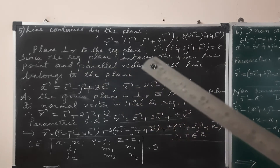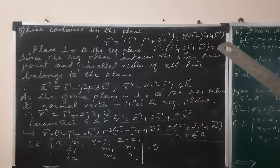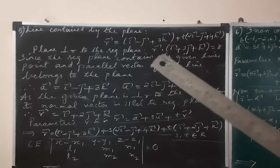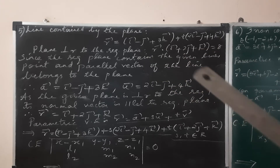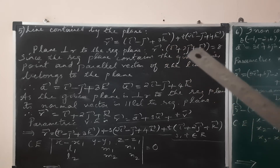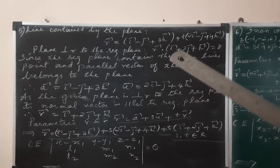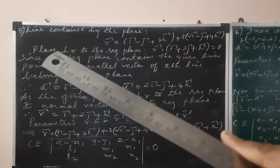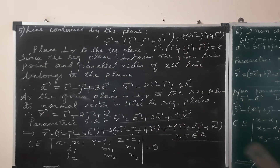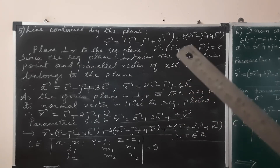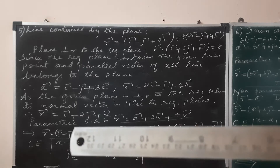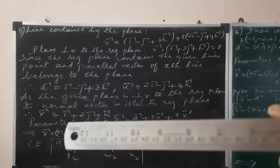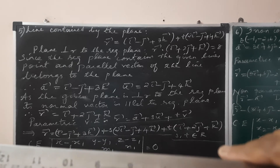The required plane is perpendicular to the given plane. The normal of the given plane gives us a vector. Since the planes are perpendicular, the normal of the given plane is parallel to the required plane. I am taking this normal vector as the v-vector.